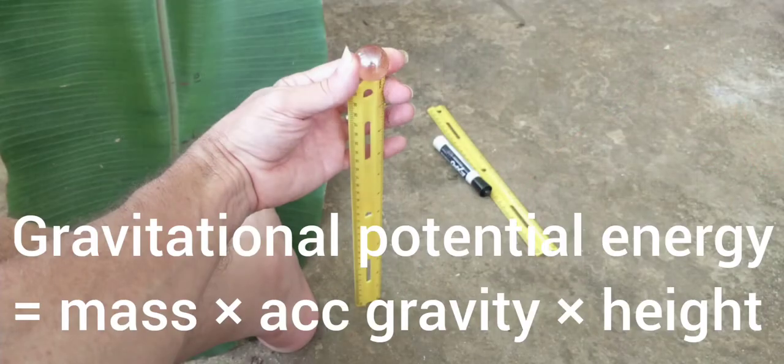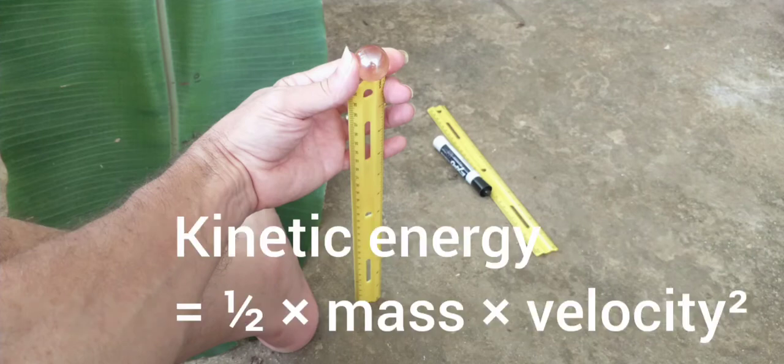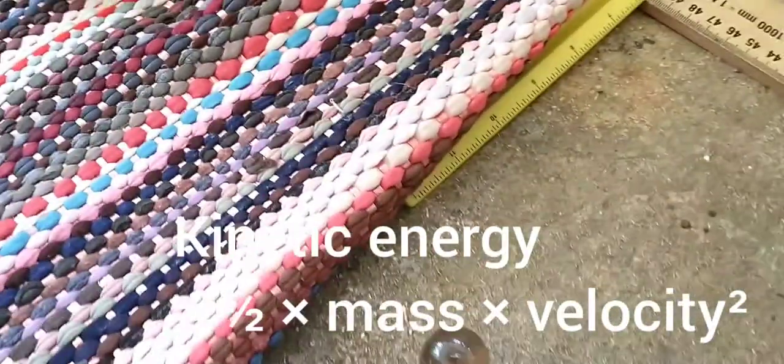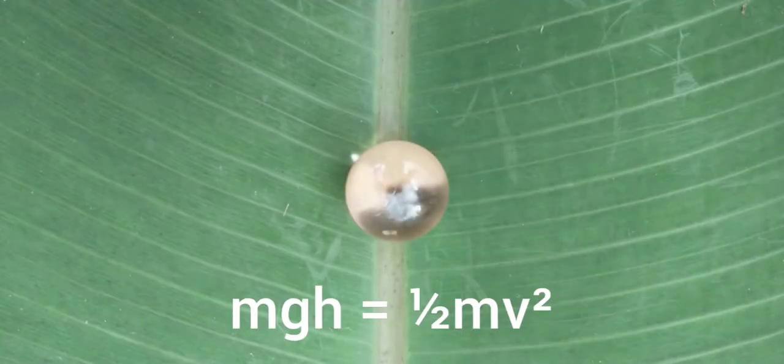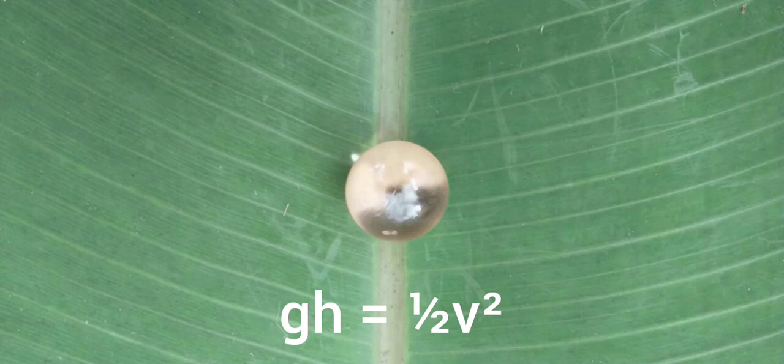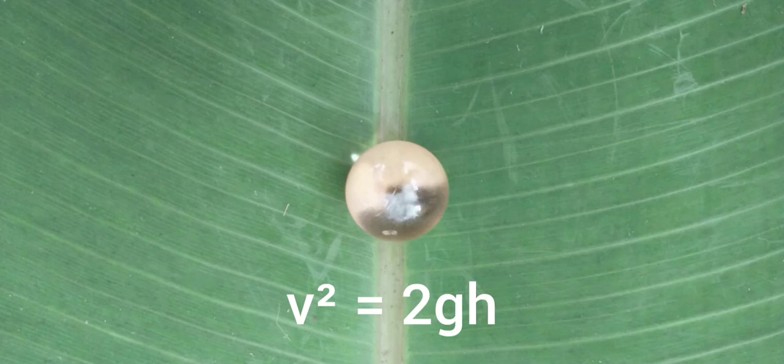Gravitational potential energy, the energy due to vertical height above the surface, is mass times acceleration of gravity times the height. Kinetic energy is 1/2 the mass times the velocity squared, the velocity at the bottom of the ramp. The gravitational potential energy at the start must be equal to the kinetic energy at the end. So, mgh must be equal to 1/2 mv squared. Divide through by the mass, and you get gh equals 1/2 v squared. Flip them around and get 1/2 v squared equals gh. Multiply through by 2, and you'll get v squared equals 2gh. Take the square root of both sides, and you'll get v as the square root of 2gh.